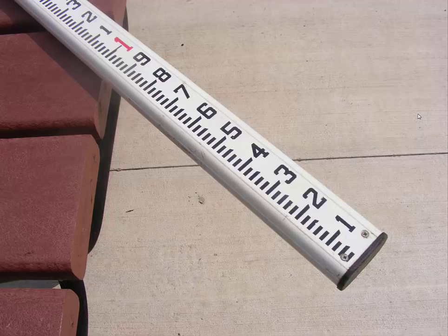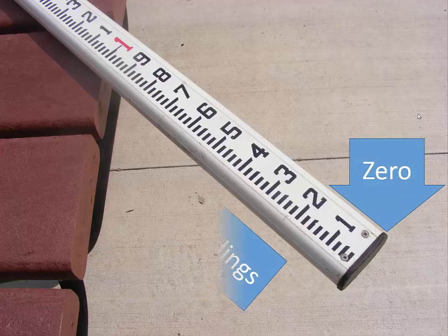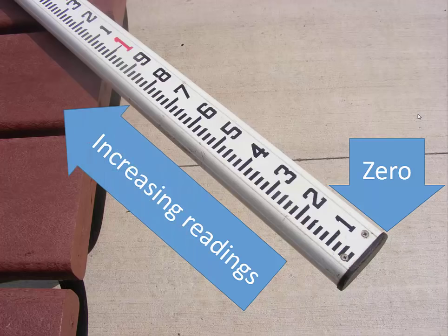We use decimal feet to simplify our computations. The very bottom end of the rod is the zero end. Thus all measurements we take are heights above the surface on which the rod sits.